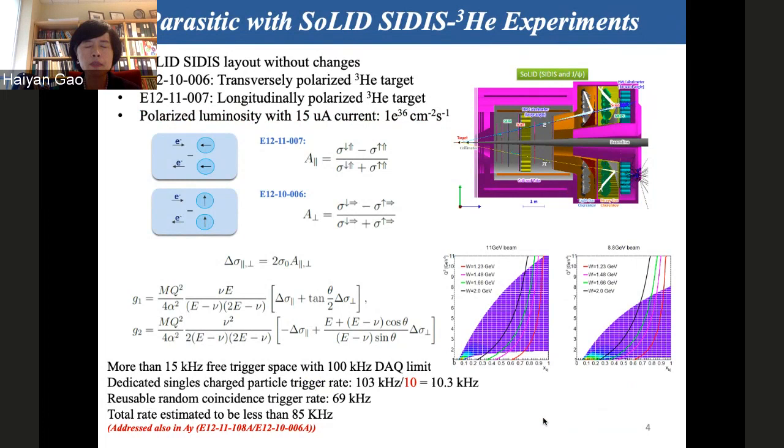How parasitically can one do this experiment? What we are interested in is the inclusive measurement, so it's the singles measurement. The current proposed designed data acquisition rate is 100 kilohertz for solid SIDIS program. The total estimated rate is 85 kilohertz. So you have 15 kilohertz free trigger space, which will allow one to use, for example, a pre-scale factor of 10 based on the total single charged particle trigger rate. One can get something like 10 kilohertz, so that can work. Furthermore, one can also use the random coincident trigger to get the data for the singles for this experiment. I want to mention that this is not the first time people in solid collaboration wanted to do the inclusive measurement. For example, the already approved run group AY experiment has gone through the same kind of exercises, and that experiment was approved.